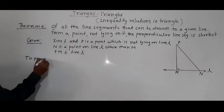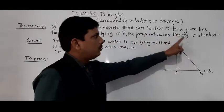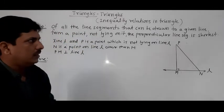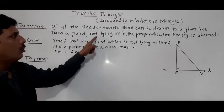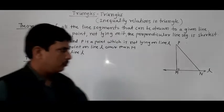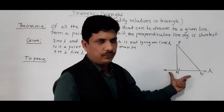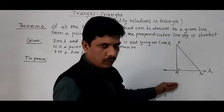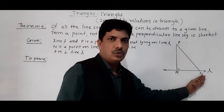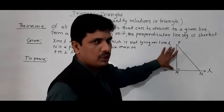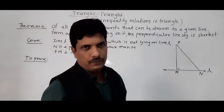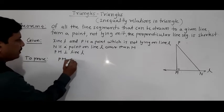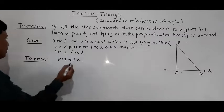To prove: the perpendicular line segment is shortest. Of all the line segments that can be drawn to a given line from a point not lying on it, the perpendicular is shortest. So here, line L is given and P is a point not lying on line L. PM is our perpendicular and PN is another segment which is not perpendicular. We have to show PM is shorter than PN — that is our target.